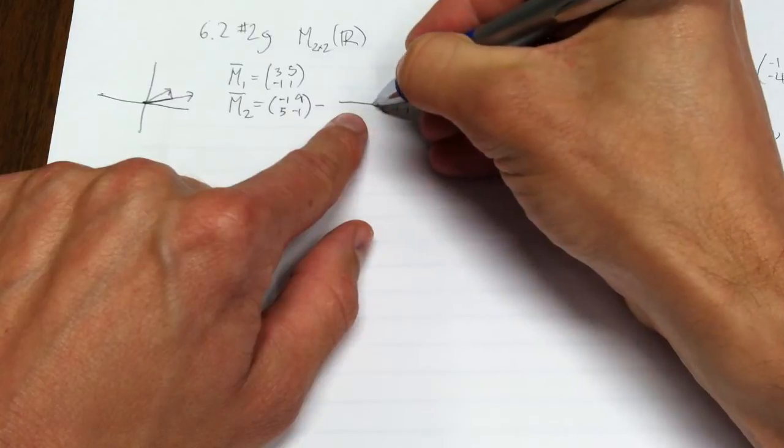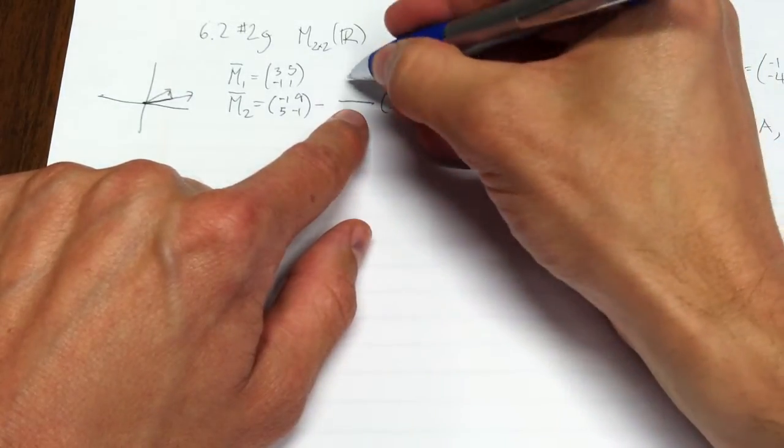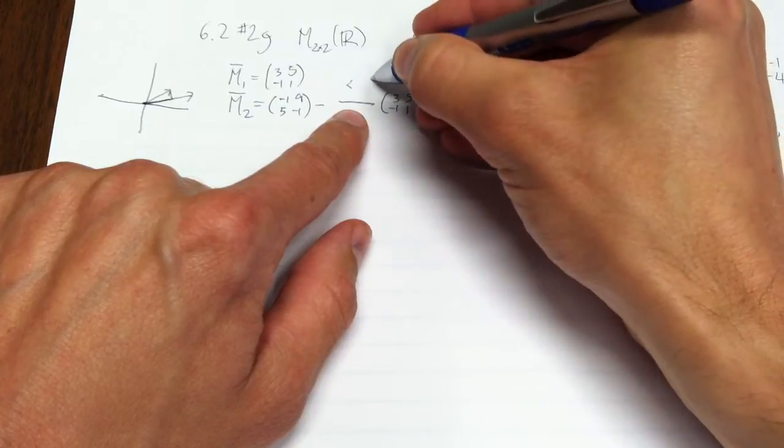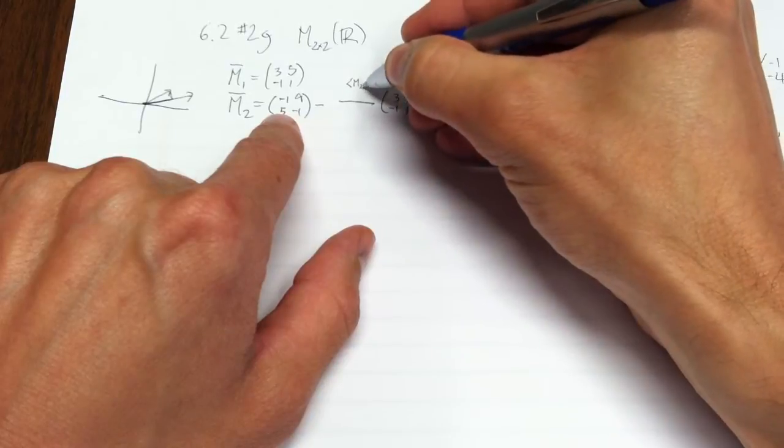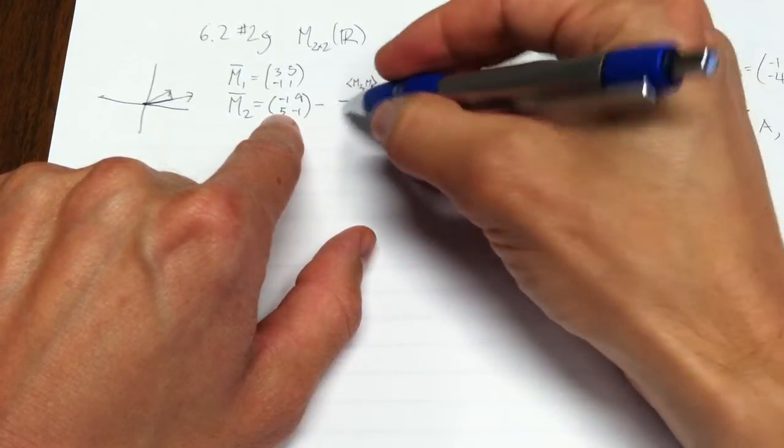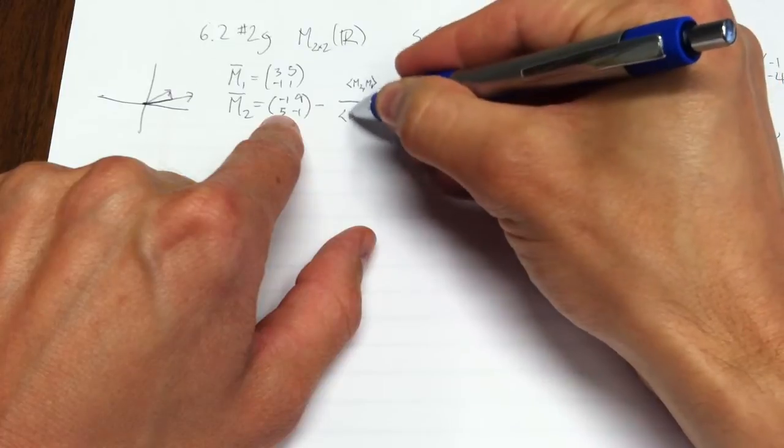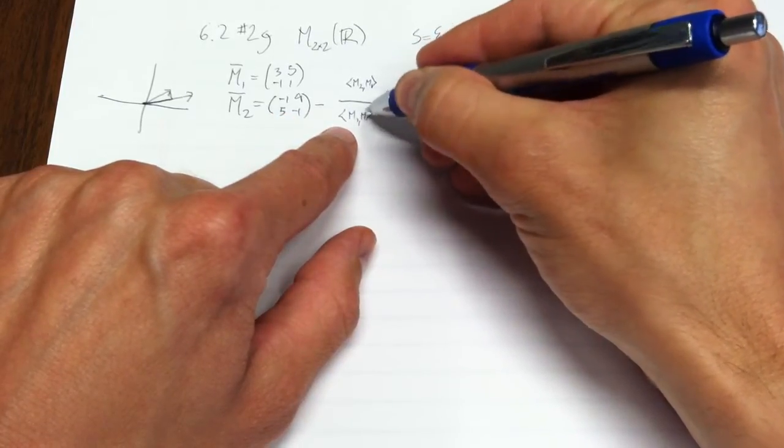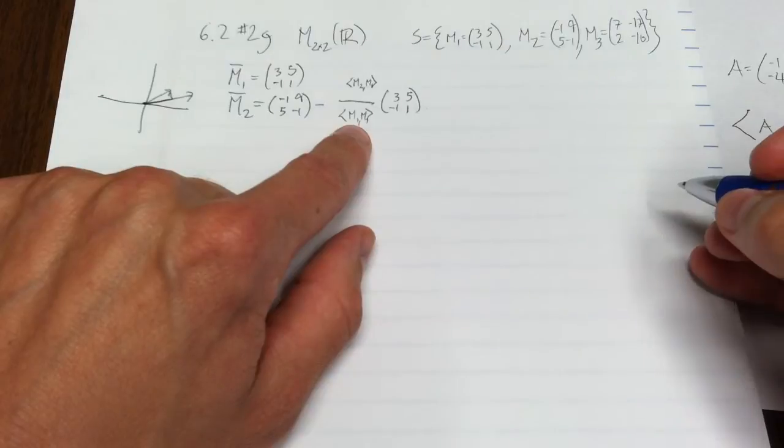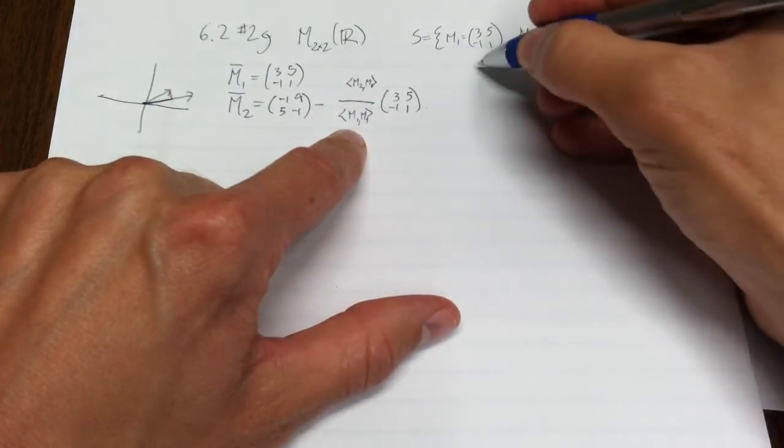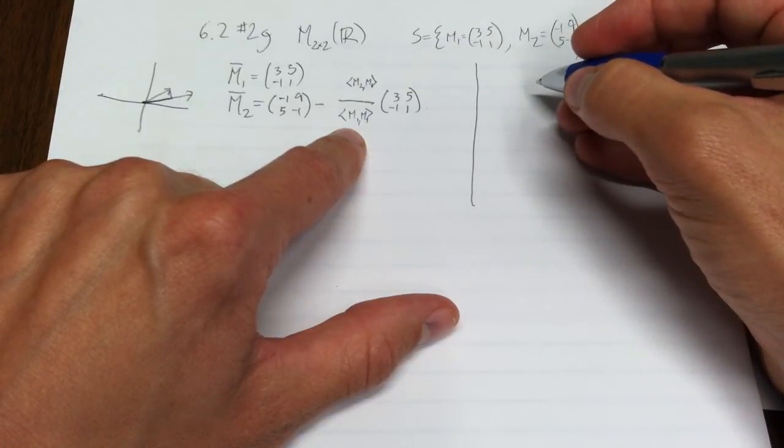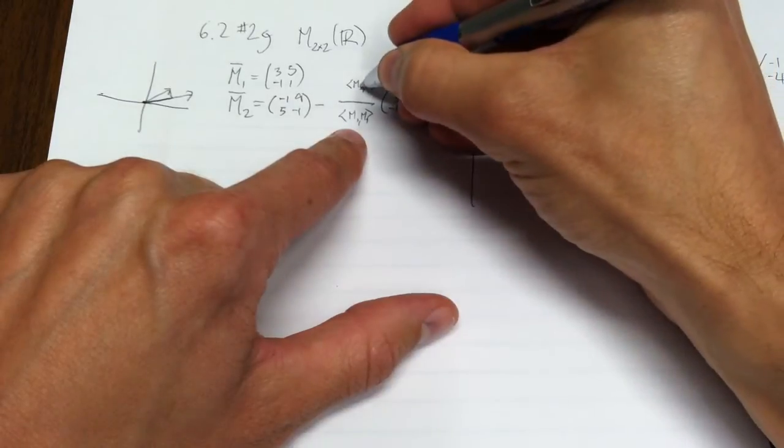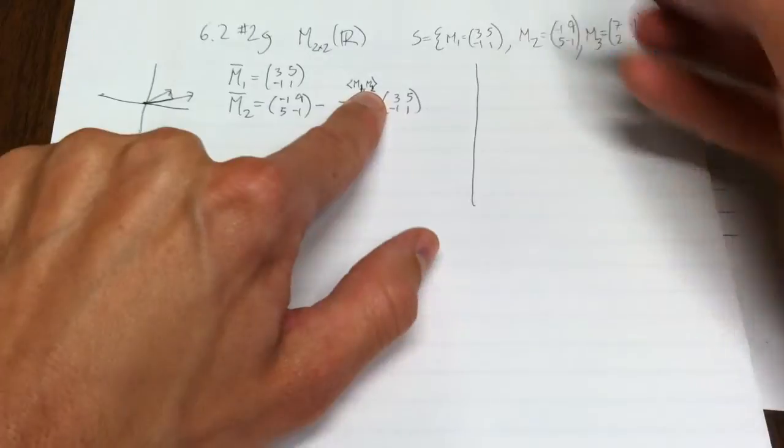So that's the direction of m1, that's the vector m1. Now I just have to get the right scalar in front of it. Turns out that the scalar there is going to be, let me just write above there, it's the inner product of m1 with m2 over the inner product of m1 with m1.